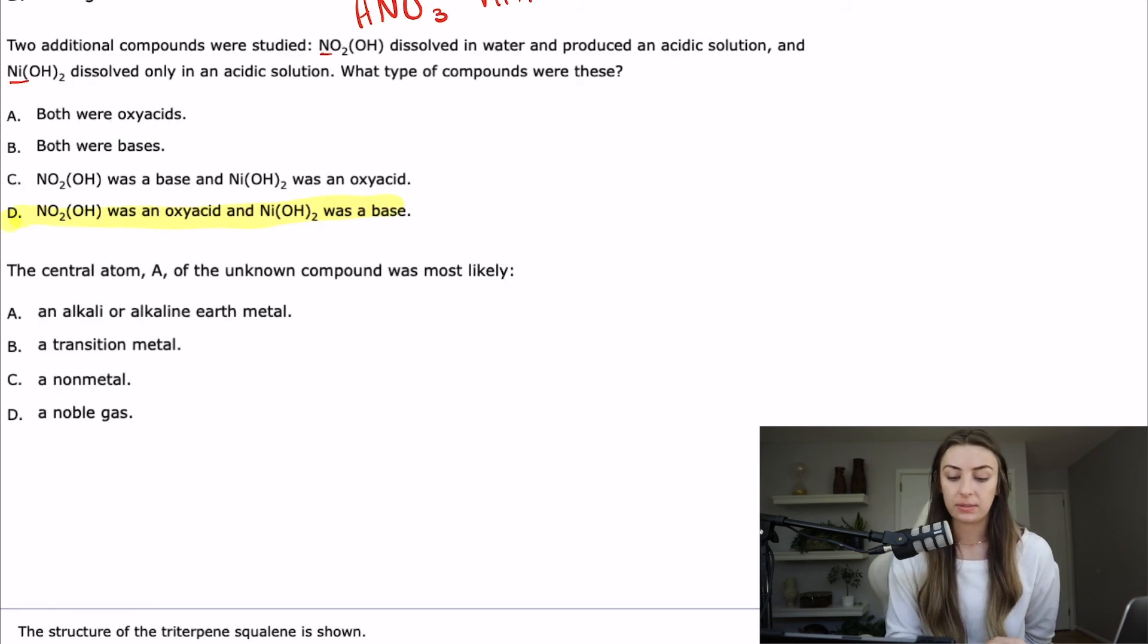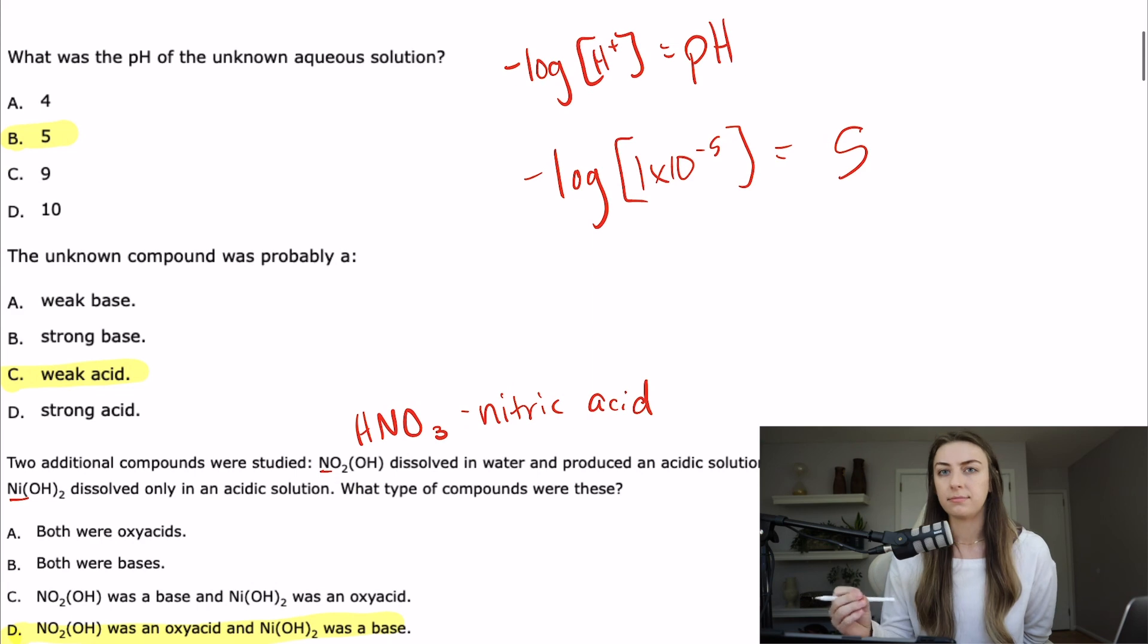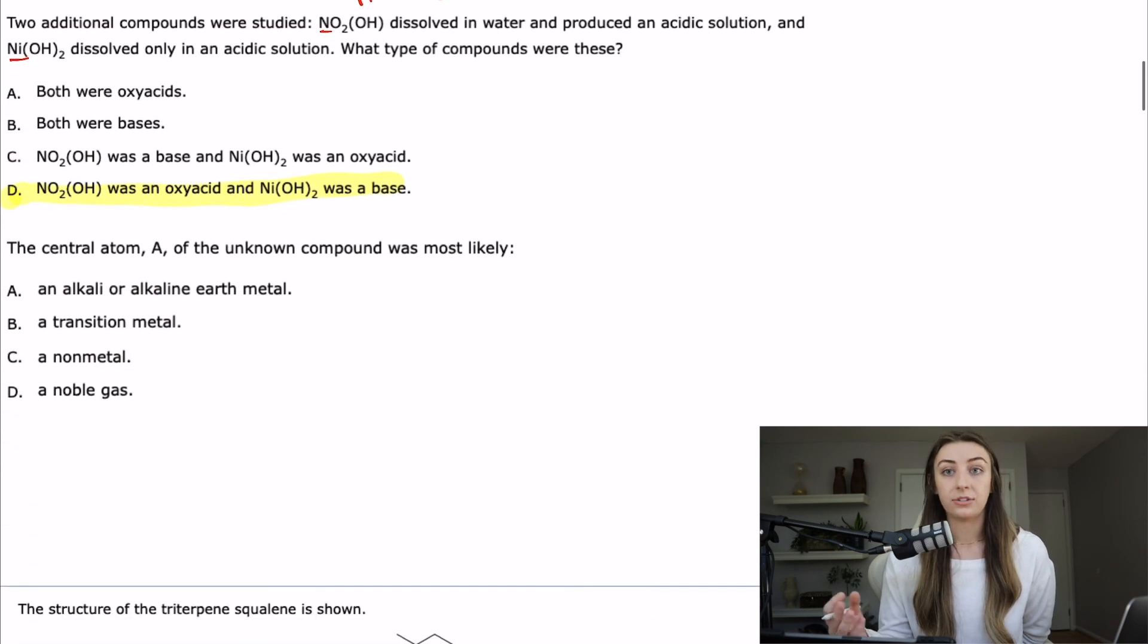The next question and the last question of this passage is the central atom A of the unknown compound was most likely what? This is kind of working forwards and backwards. We have to think about is the unknown compound an oxy acid or is it a base? We've already kind of in the first two questions pinned down that it's an acid. And therefore it's just a matter of realizing that an acid in this passage is theorized to have a central atom that's a non-metal. So therefore the central atom of the unknown compound was probably a non-metal.